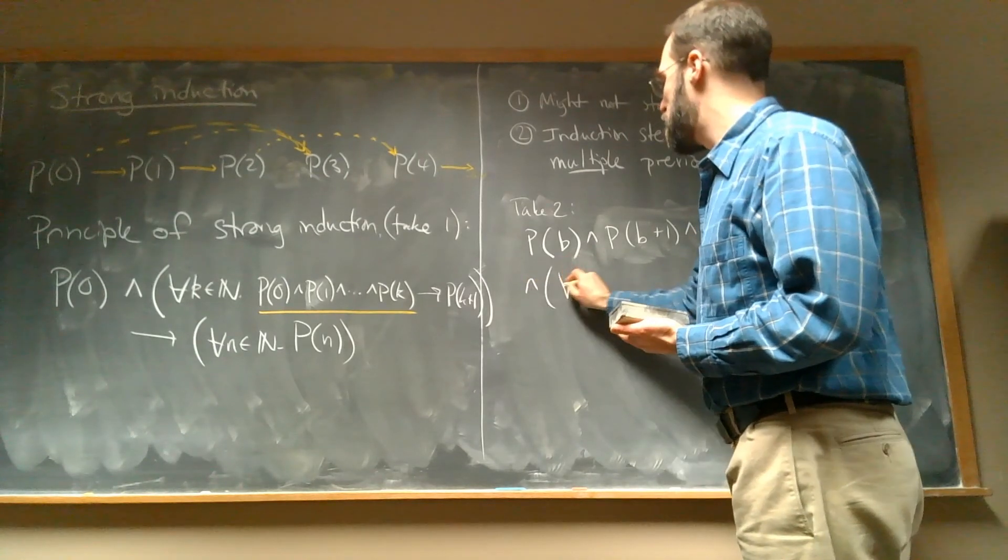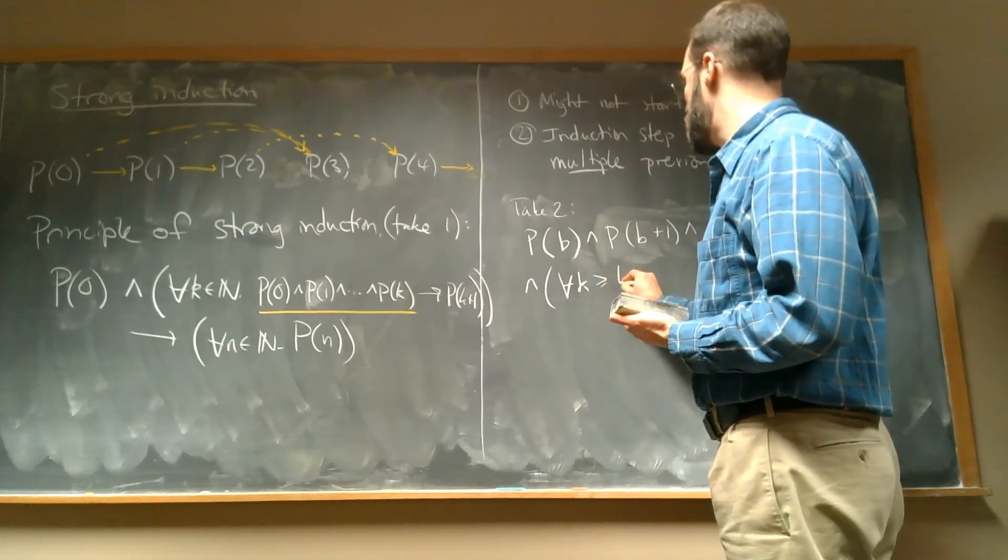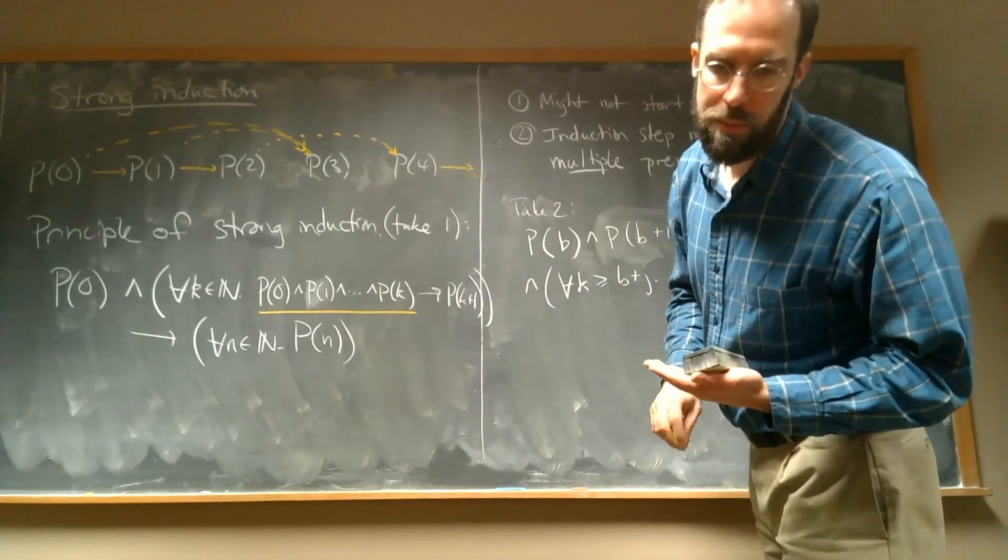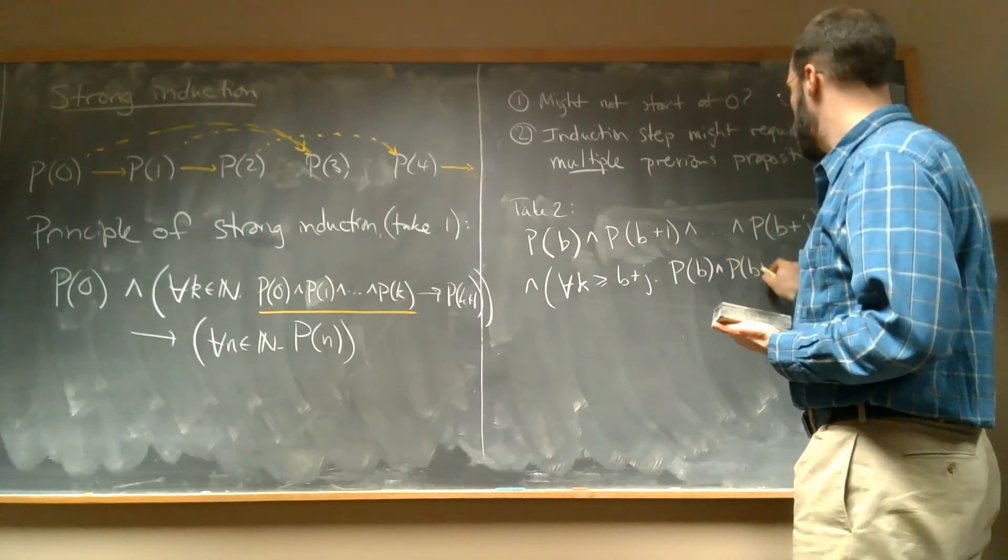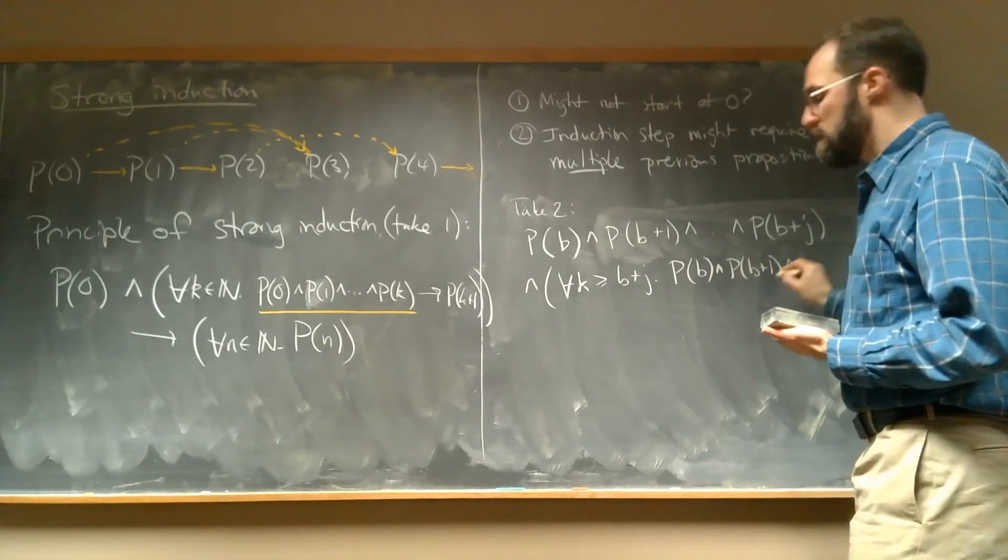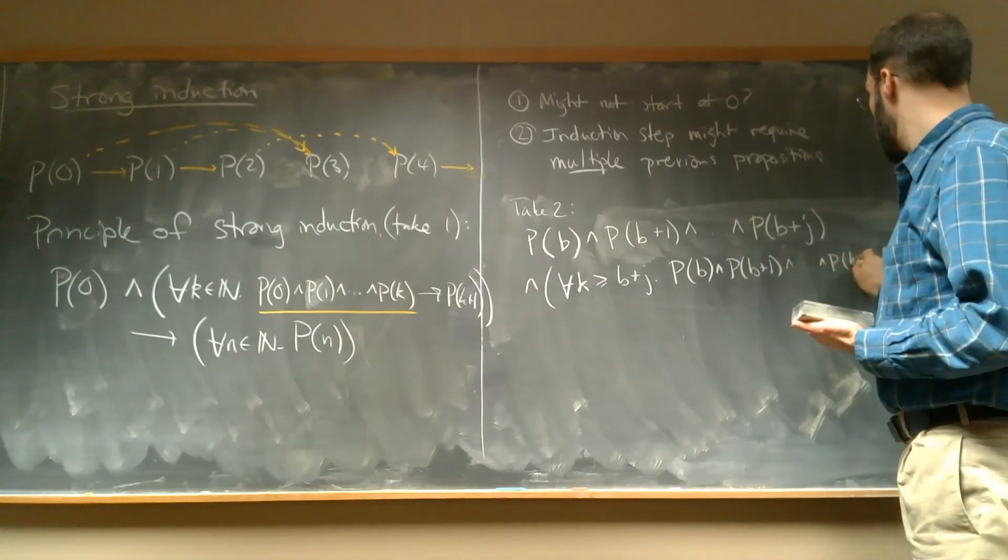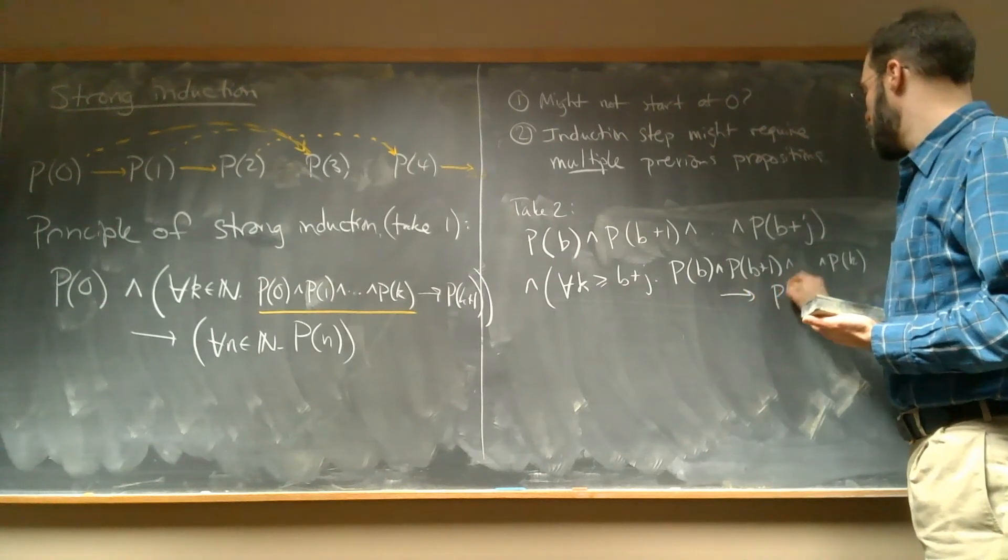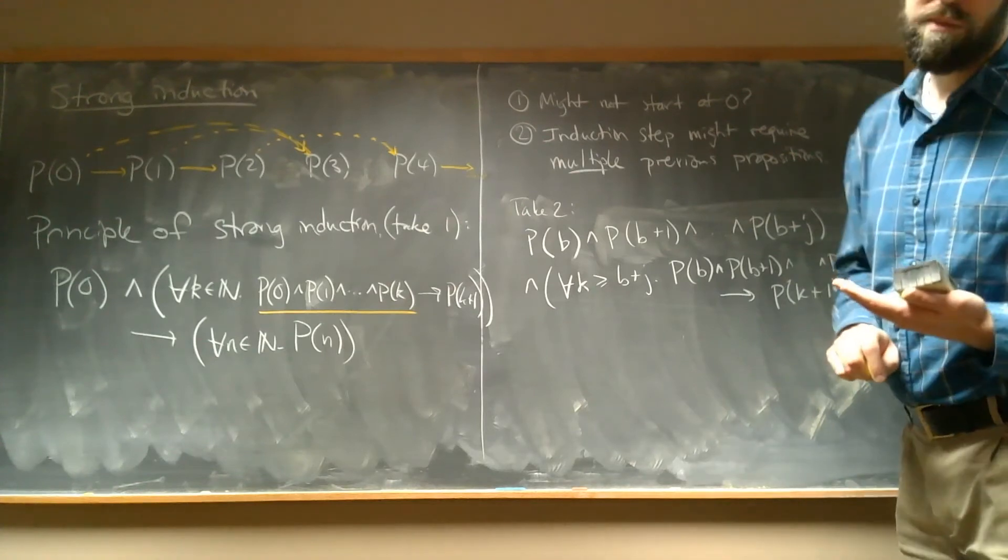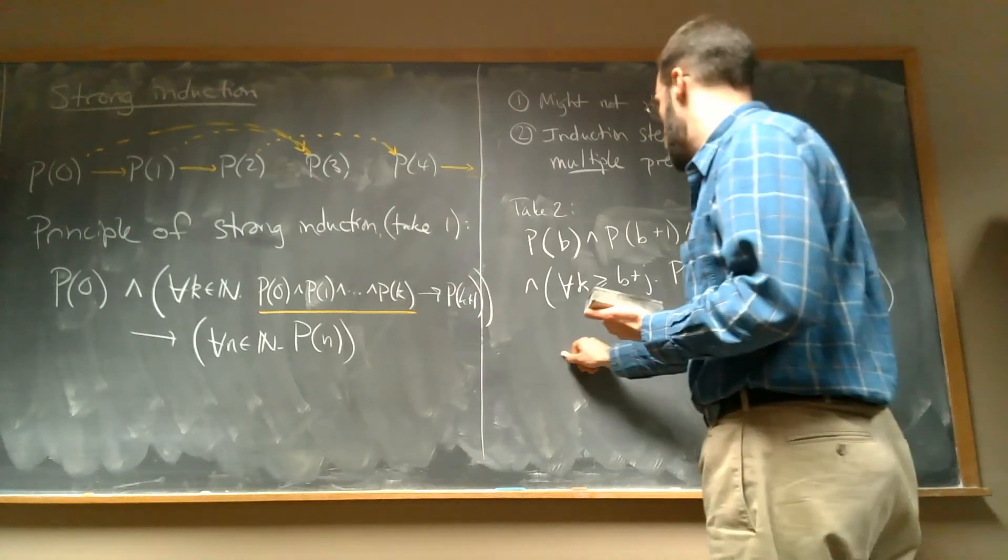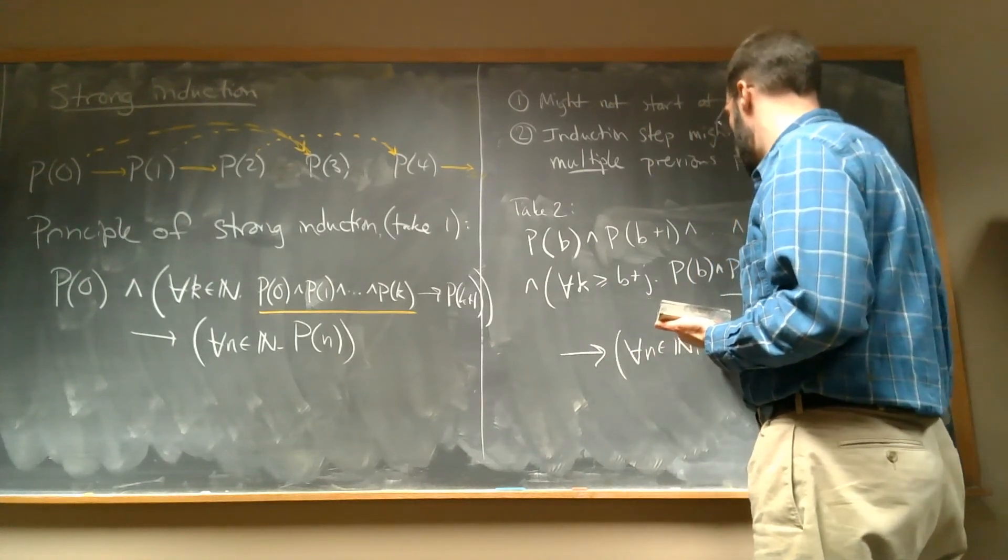And then we assume that for all K greater than or equal to B plus J, P(B) holds, and P(B+1), and all the way up to P(K), if all of that implies P(K+1), then we can conclude that for all N, P(N).